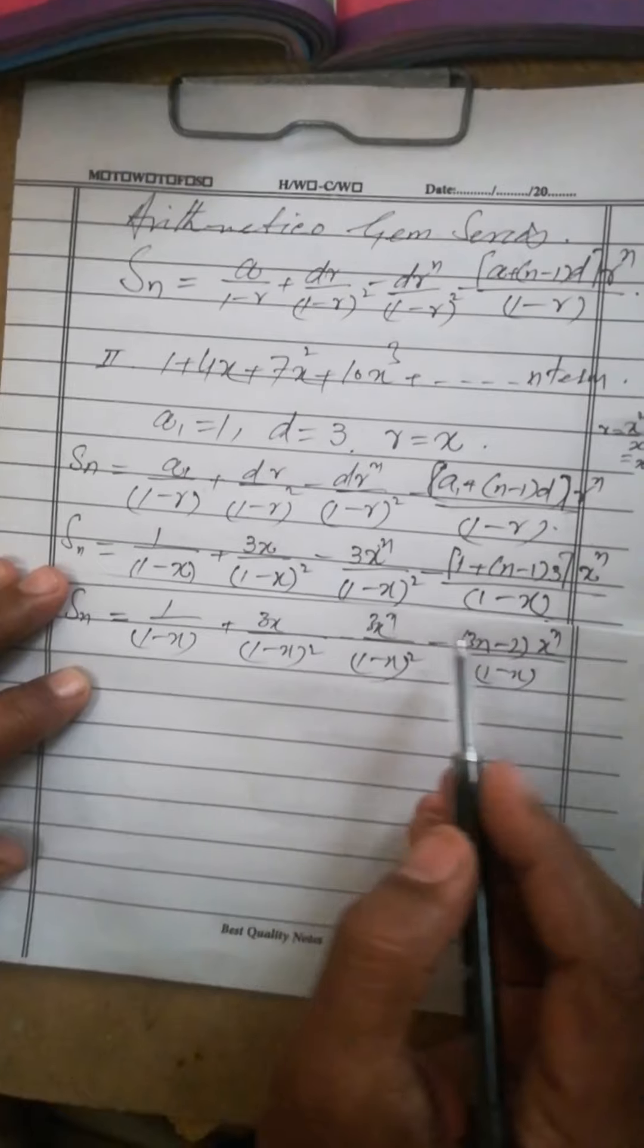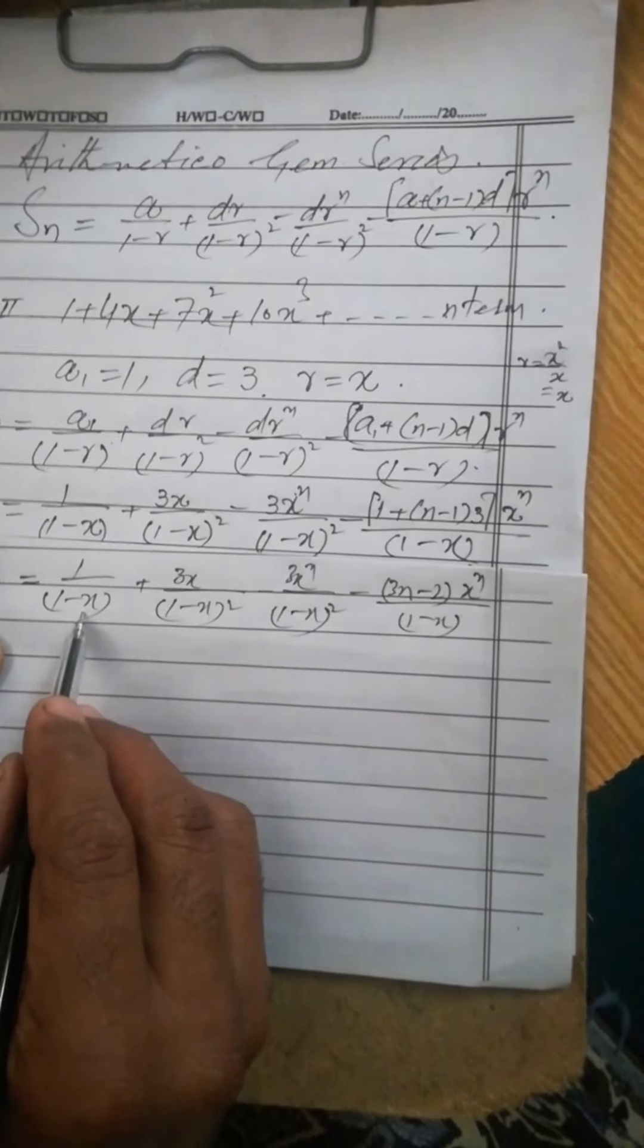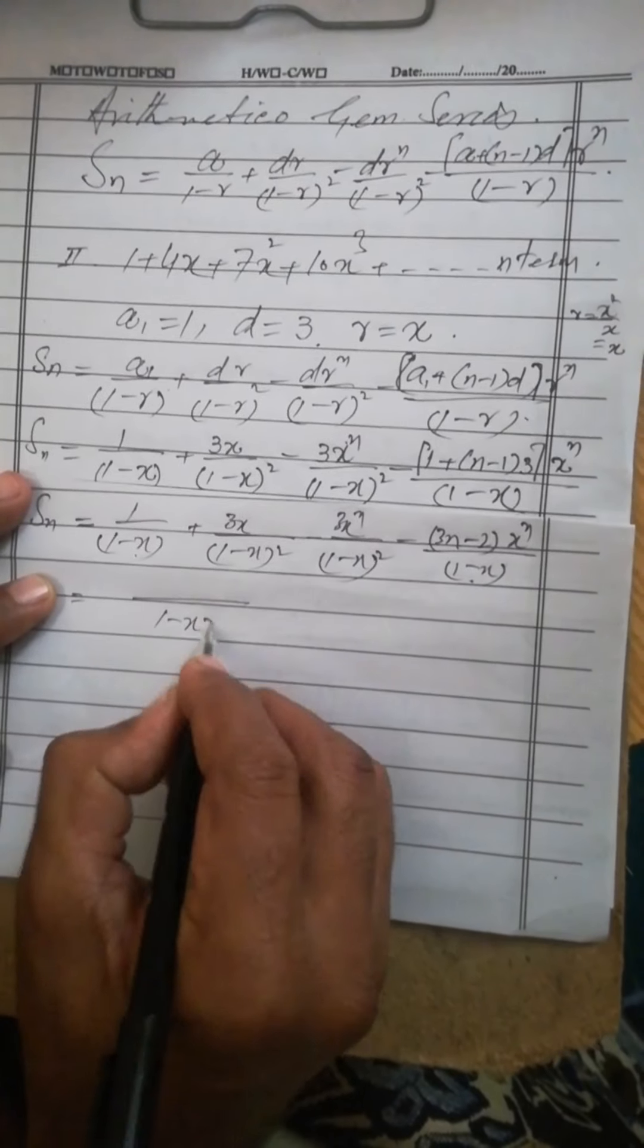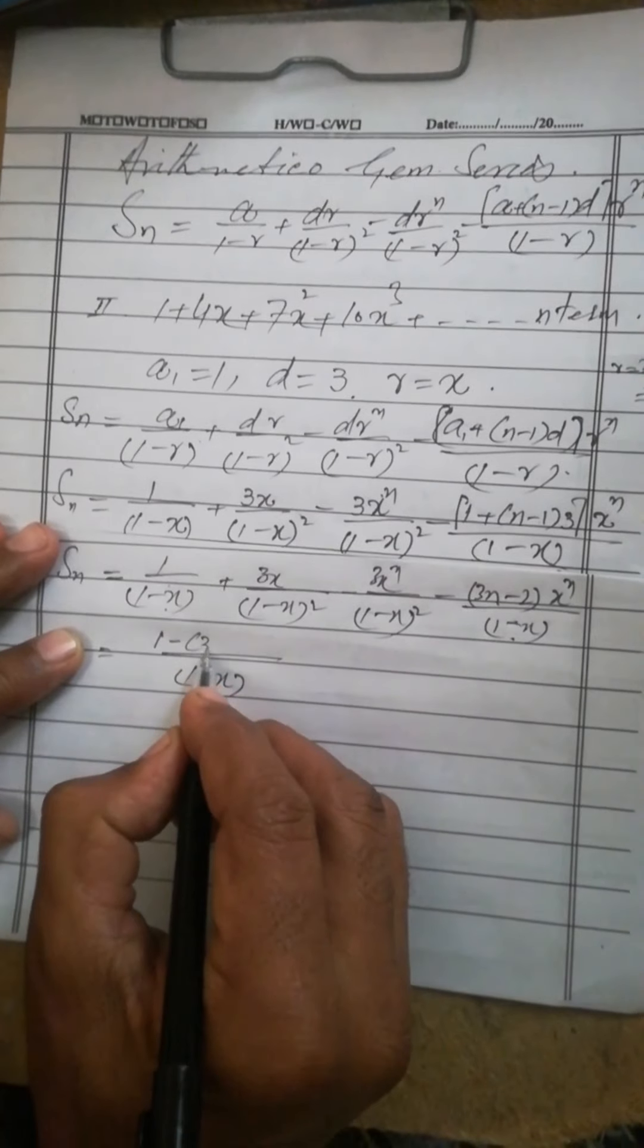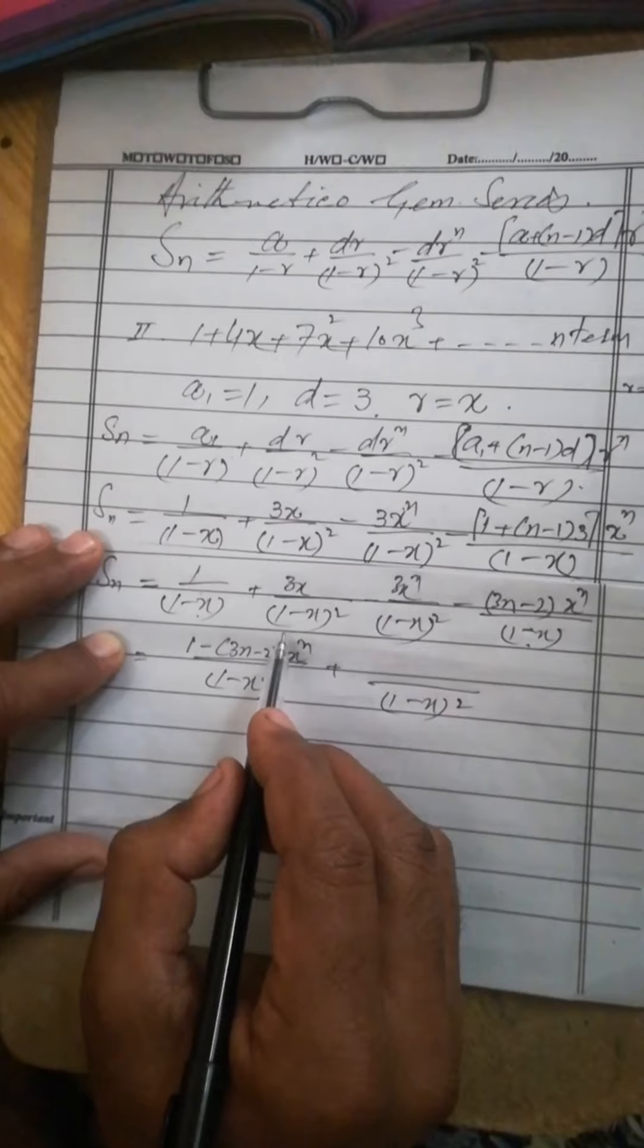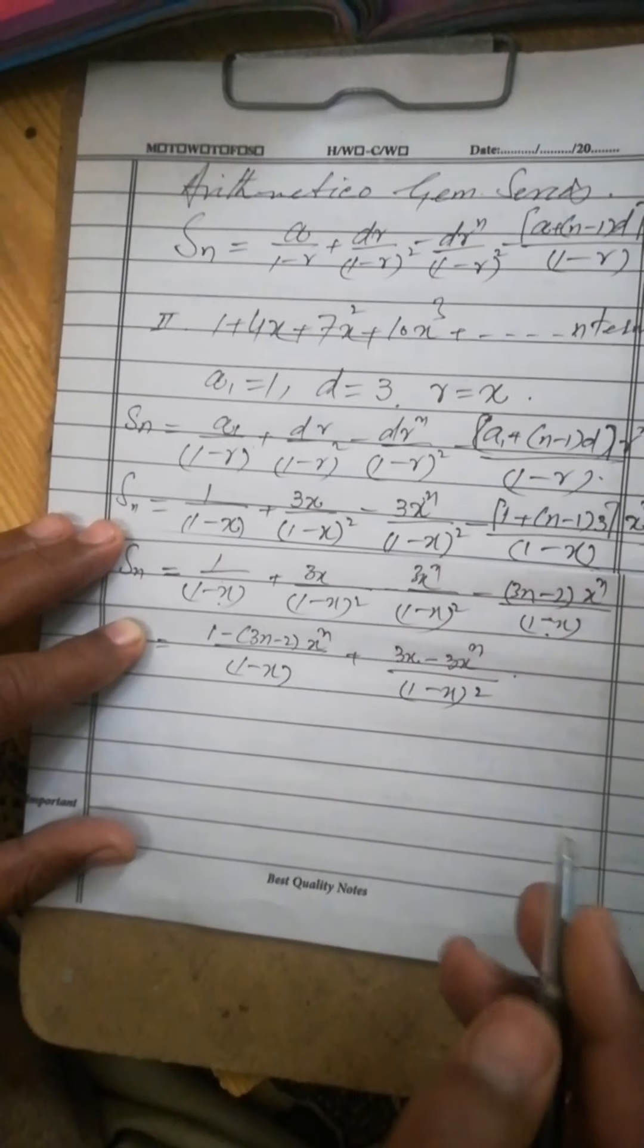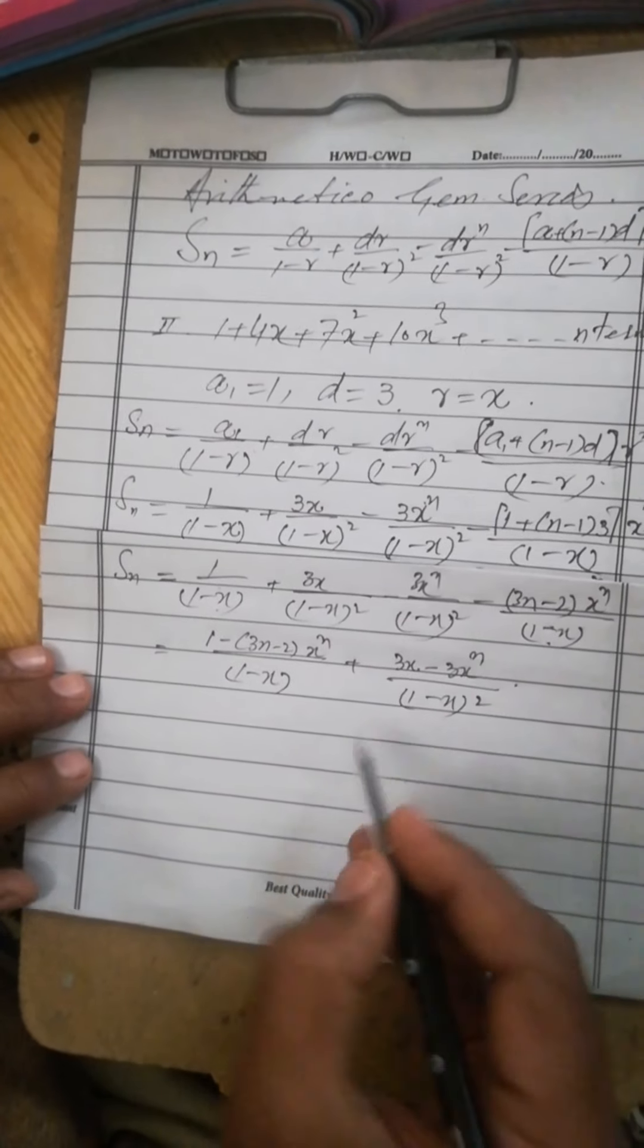Simplify this. Here simply multiply these two, 3n and minus 3, so it becomes like this. You see 1 minus x, 1 minus x. Combine these two and take LCM. 1 minus x. Take the LCM of these two, and the LCM of square and square. So 1 minus 3n minus 2x power n plus. Take the LCM of 1 minus x square, so this is 3x minus 3x power n. You can leave it like this, it's correct. Or if you bring the answer from the book then rearrange it a little. This is the answer.